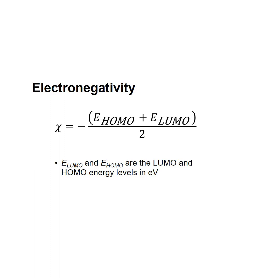Electronegativity. E_LUMO and E_HOMO are the LUMO and HOMO energy levels in electron volts.